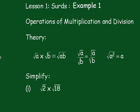This is the theory. The square root of A multiplied by the square root of B is equal to the square root of A multiplied by B. In division, the square root of A divided by the square root of B is equal to the square root of A divided by B, and the square root of A squared is A.